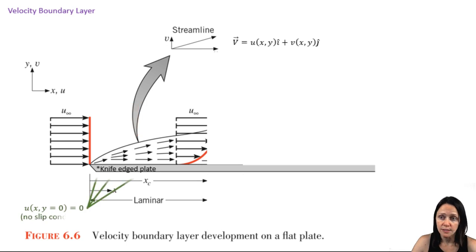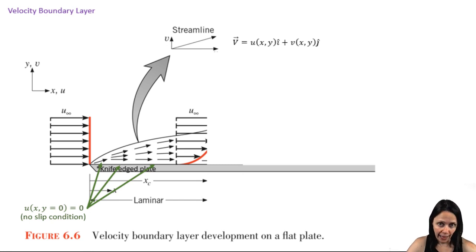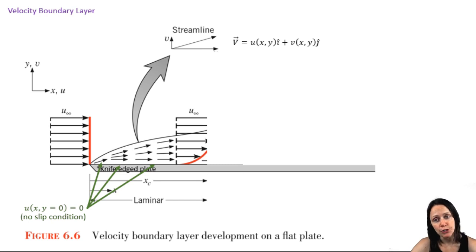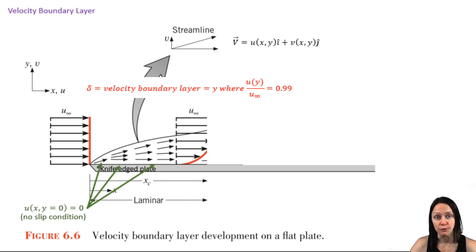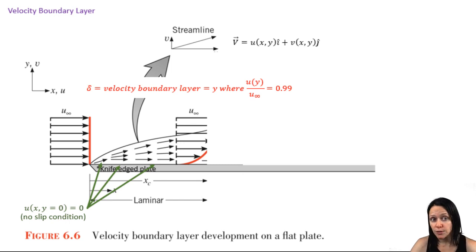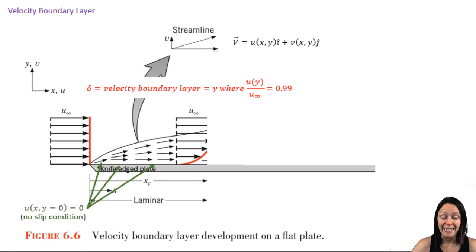At the surface, the velocity is zero. This is termed the no-slip condition. So the velocity is zero right at the plate, but as we move away from the plate, the velocity will eventually get to the free stream velocity, which we termed u-infinity. The layer that you see developing is the velocity boundary layer. It's defined as the thickness y where the velocity is 99% that of the free stream velocity. This boundary layer is the region of flow in which the effects of viscosity are felt — in other words, the region of flow in which the effects of flow over the plate are felt into the fluid.